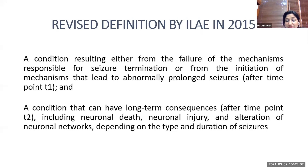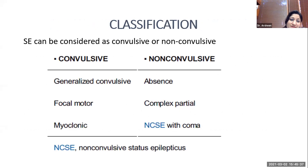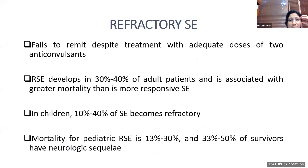Status can be classified as convulsive and non-convulsive. Convulsive types include generalized convulsive, focal motor, and myoclonic. Non-convulsive types include absence seizures, complex partial seizures, and non-convulsive status epilepticus with coma.